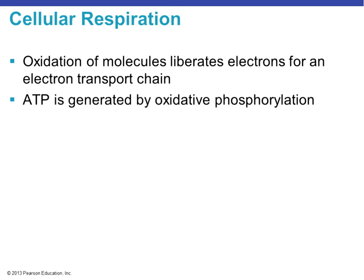Glycolysis is the first step of cellular respiration and can be aerobic or anaerobic. The oxidation of these molecules liberates electrons that can be used in the electron transport chain. We've already talked about one carrier made in glycolysis — the two NADH molecules that go to the electron transport chain to facilitate oxidative phosphorylation and generate ATP. There are three stages: the first is glycolysis, and the next stage we'll discuss is the Krebs cycle.